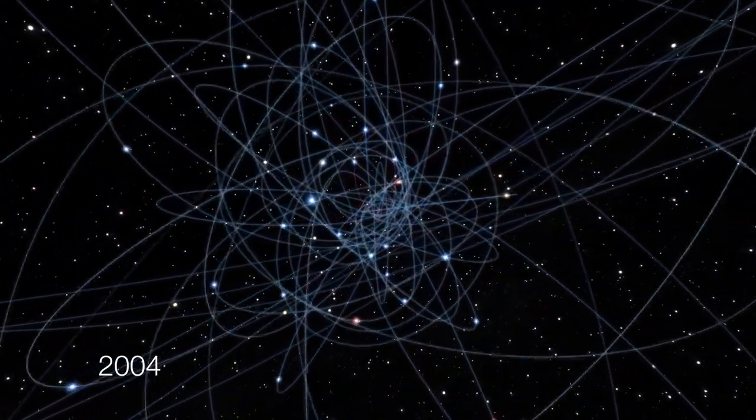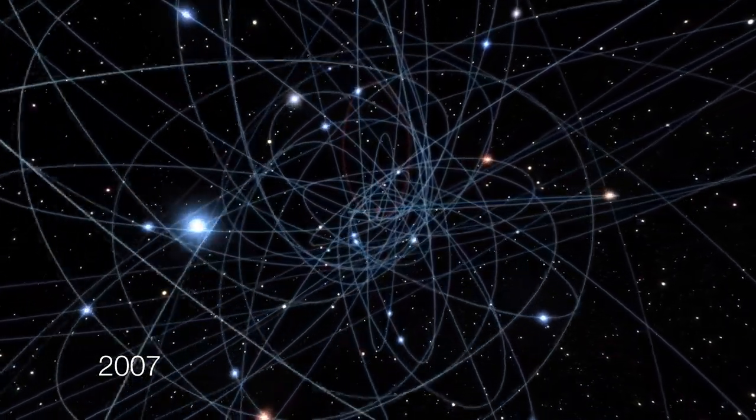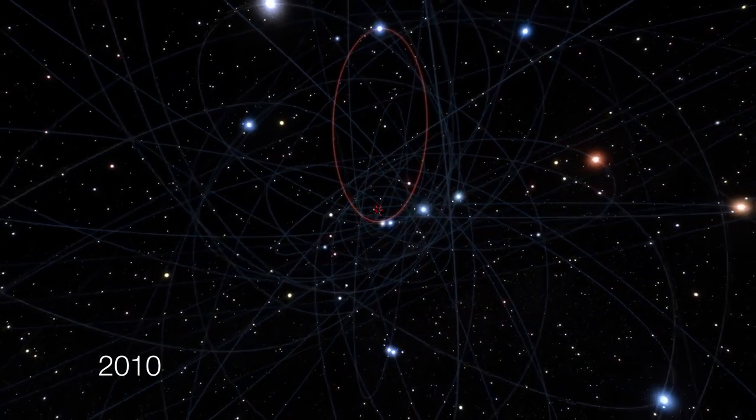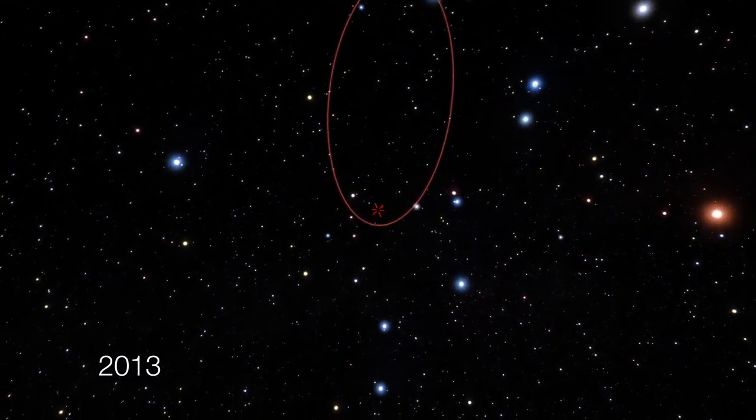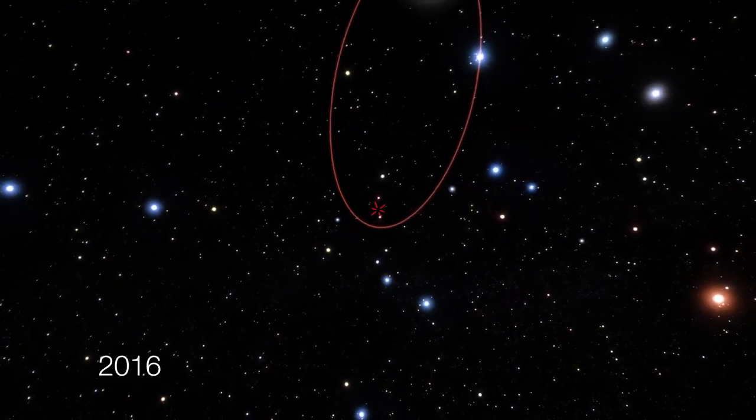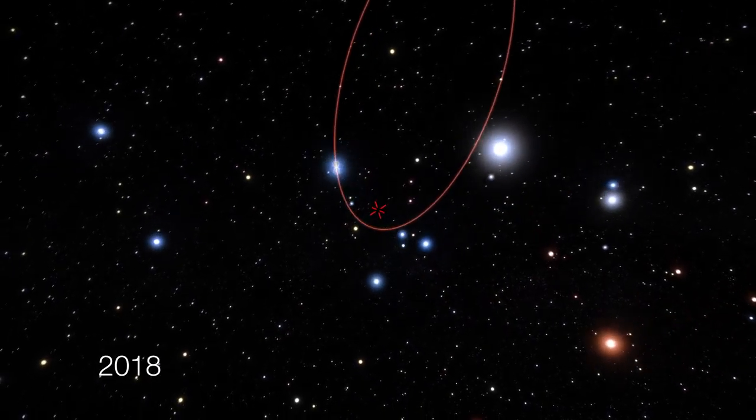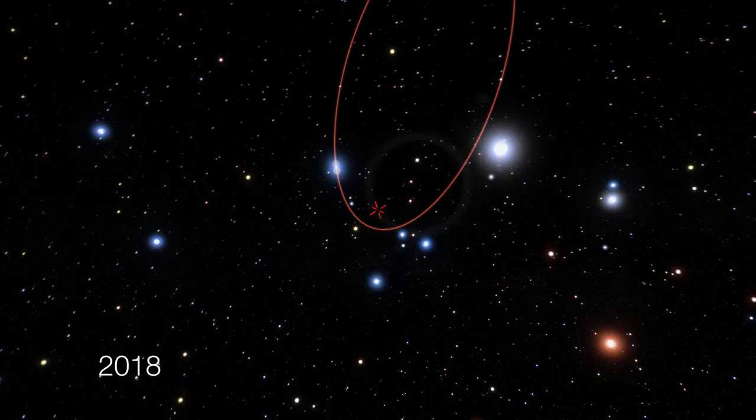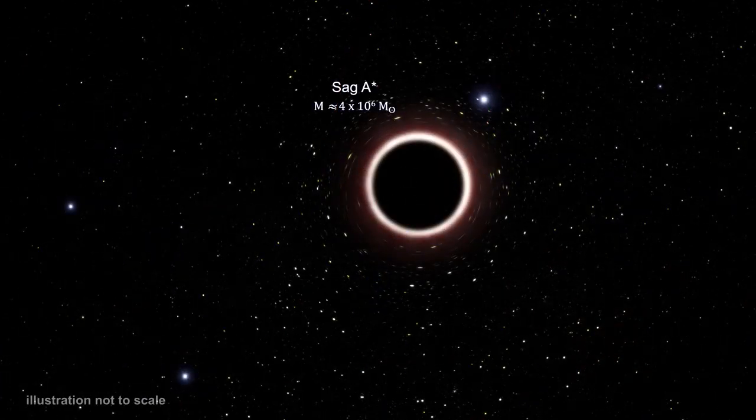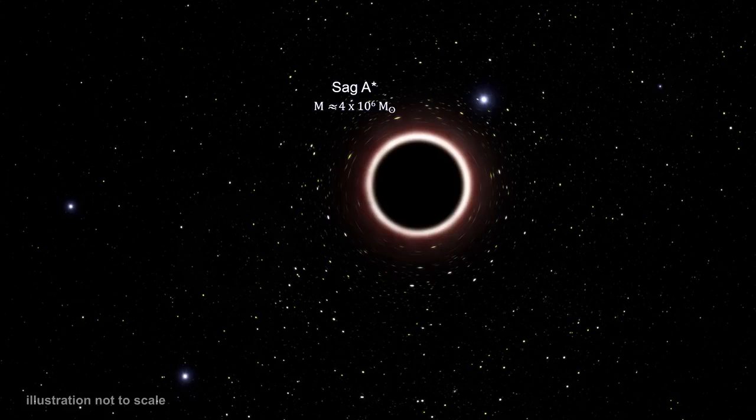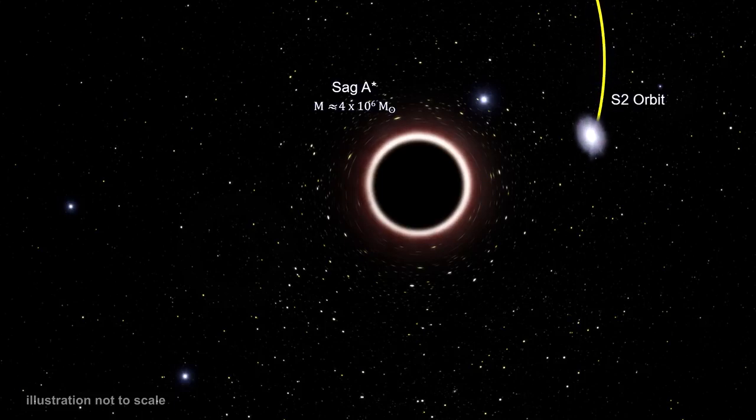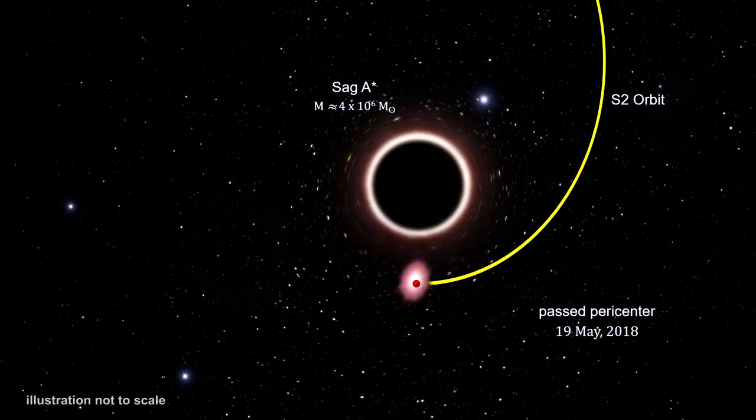But we weren't done with S2. Its orbital period is 16 years. Following the 2002 passing, a major effort was mounted to upgrade ESO's Very Large Telescope Array to enable the precision needed to reveal the true geometry of space and time near this object and test Einstein's theory of general relativity. These new instruments followed S2 very closely. At the start of 2018, it was accelerating towards Sag A-star, reaching relativistic speeds. On May 19th, it reached the closest approach, periastron. At that point, it was traveling at 7,650 kilometers per second, or 4,753 miles per second. That's almost 3% of the speed of light.